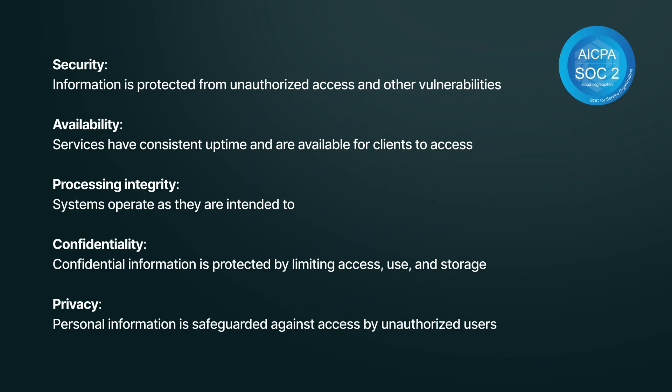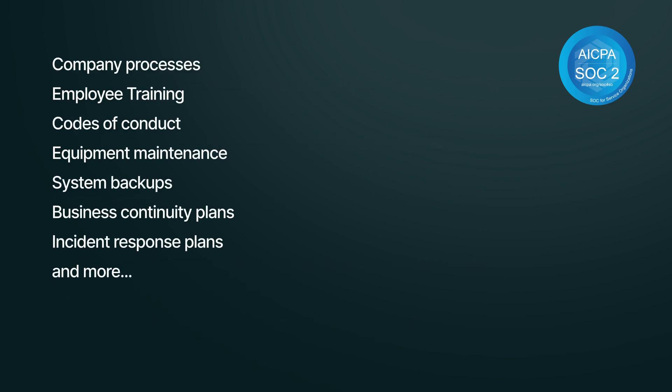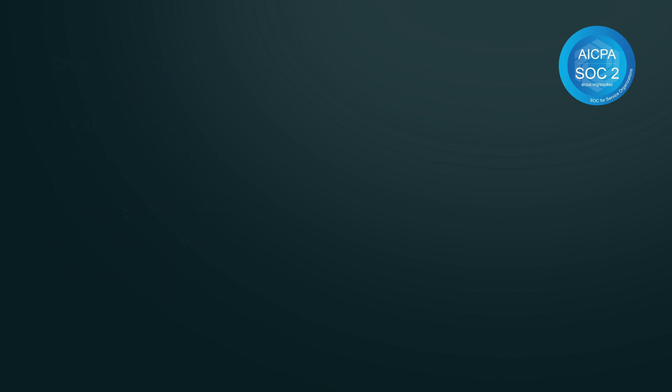SOC 2 bases its framework on five core principles: security, availability, processing integrity, confidentiality, and privacy. To earn a certification, tech companies have to be audited by independent evaluators. And that audit is extensive, going through company processes, training, employee codes of conduct, equipment maintenance, system backups, business continuity plans, and incident response plans. The result at the end is a thorough picture of a company's security practices, delivered in a format that is easy to evaluate.